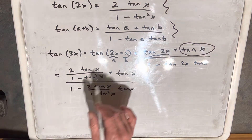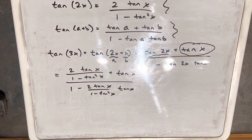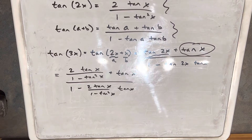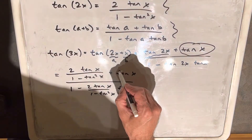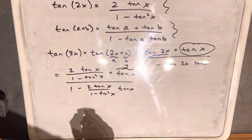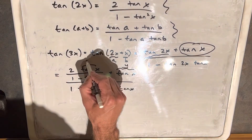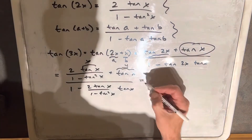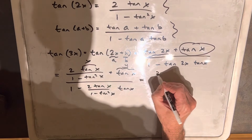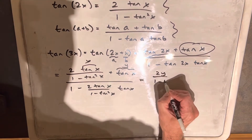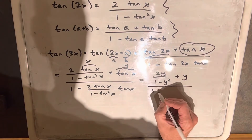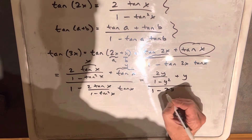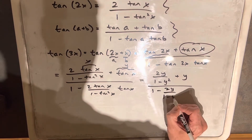Now we do have everything in terms of tan x, but we want to clean it up because it's a lot to look at. What I like to do here is, instead of writing tan x every time, we're going to substitute and call it y. So wherever you see tan x, we'll call that y and rewrite. So we're going to have 2y over 1 minus y squared, plus y — just a little easier to deal with.